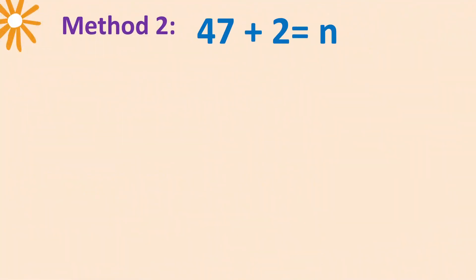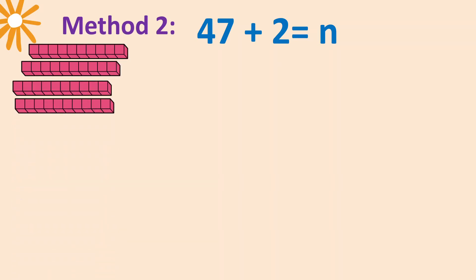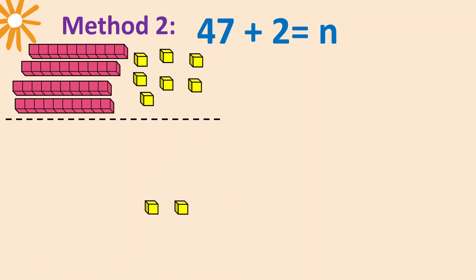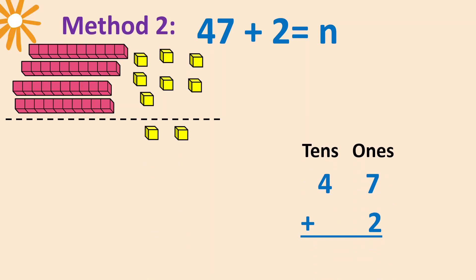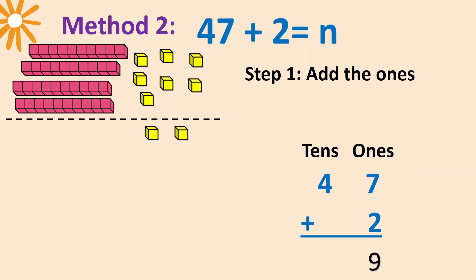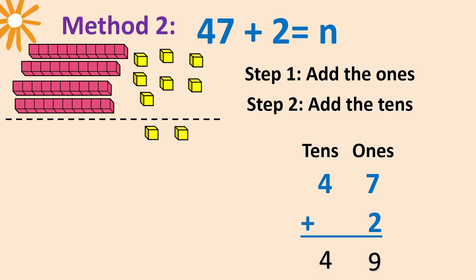Next method: use the blocks. Let's represent 47 using the blocks — four tens and seven ones — then we add two. Write it vertically and align the ones and tens. Seven plus two is nine, so we add the ones — that's the first step. Second step: add the tens, four plus nothing — that means still four.